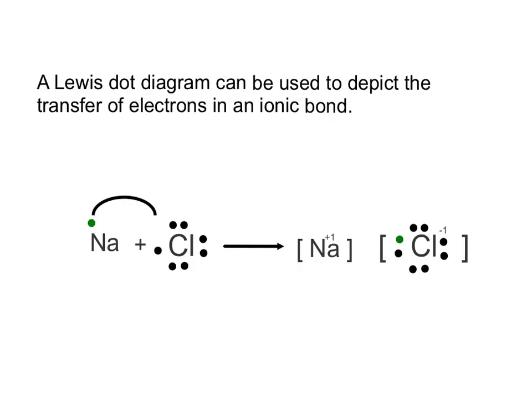Here's an example of what a Lewis dot diagram looks like for showing a transfer of an electron. Sodium has one valence electron — as a metal with a low number, it's going to lose it. Chlorine, sitting here with seven valence electrons, will gain that electron. You can see an arrow showing the transfer of those electrons, and then at the end we have our two ions, each in brackets. Sodium now has no electrons around it — the next shell in is full, so it is stable.